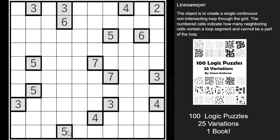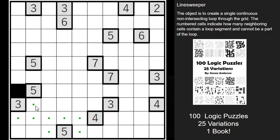The easiest place to start is along the edges or corners. Here we have a five — we know there are going to be five line segments next to it. I'm placing a dot because I don't know exactly how the line goes yet. Now I know this cell cannot contain a line segment because if a line goes in there, that's a dead end — there's no way for the line to get out of that area. So that cannot be part of the line. And now this three only has three cells left, so all of those cells must contain the line.